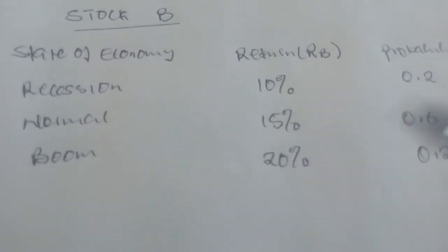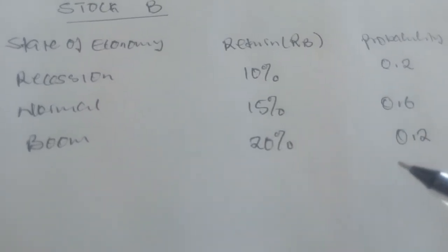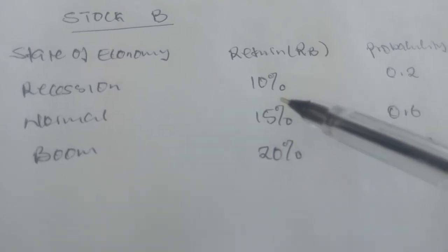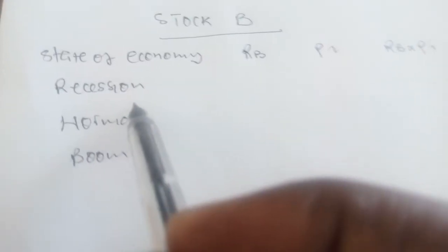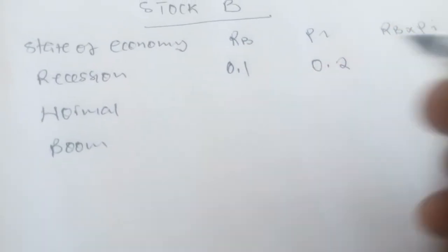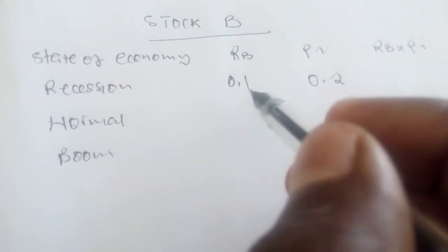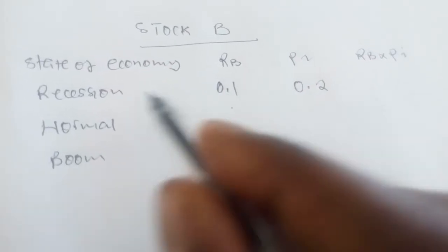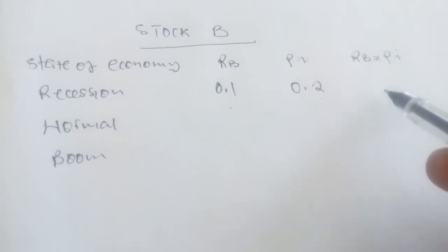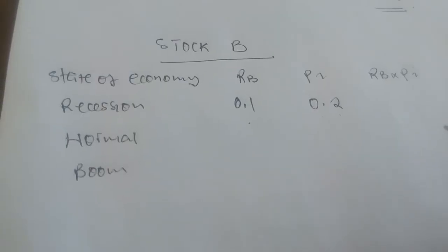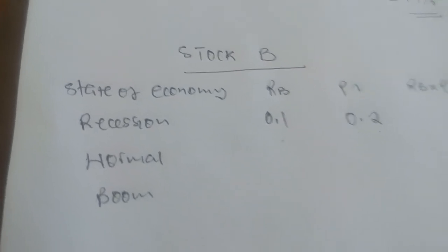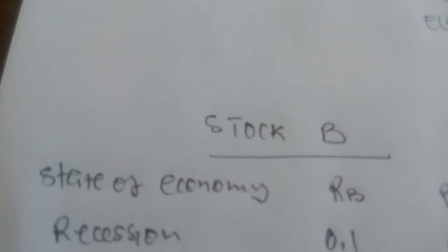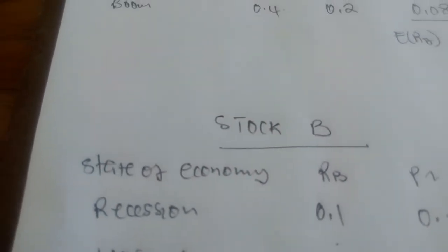We can do the same for stock B. For stock B, we had the following returns and probabilities. Remember, we also have to start by converting these numbers which are in percentages. The first return under recession was 10%, which converts to 0.1, and the probability is 0.2. When we multiply the return on B under recession and the probability, we get 0.1 times 0.2, which is 0.02.